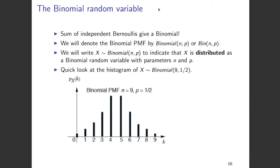To understand how binomials and Bernoullis are related: a binomial is nothing but the sum of independent Bernoullis, and we denote the binomial probability mass function or PMF by binomial(n, p). These are the two parameters of the binomial distribution: n is the number of tosses and p is the probability of getting a success in a particular toss.